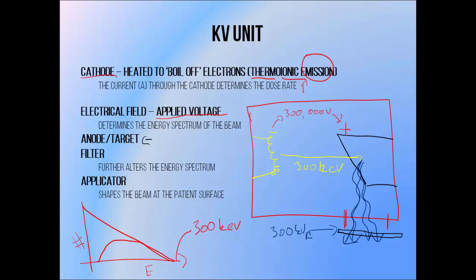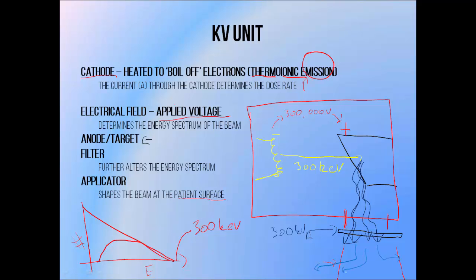When treating patients, we generally insert an applicator below the filter. It's normally a cone of metal which contacts the patient's skin, allowing the beam to be given a clinically useful shape with very sharply defined edges. It's important to shape low energy photon beams close to the patient's skin surface, because low energy photons can be scattered in the air, which results in them moving in directions other than that in which the beam is pointed, so they tend to hit structures that aren't your target.